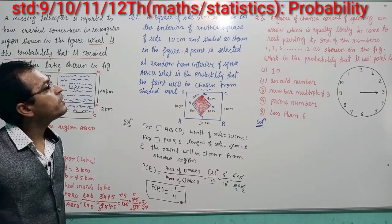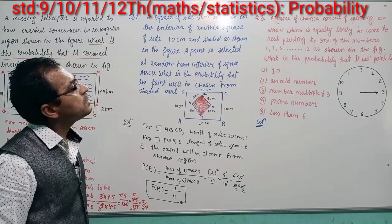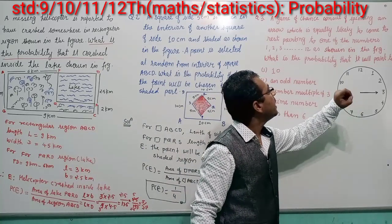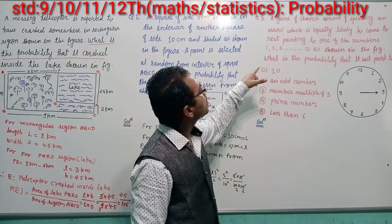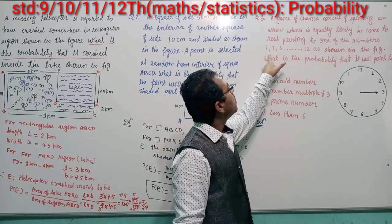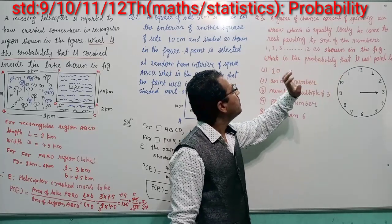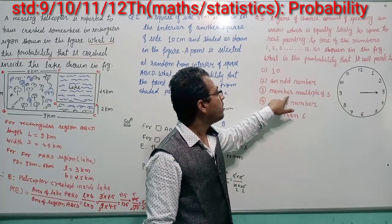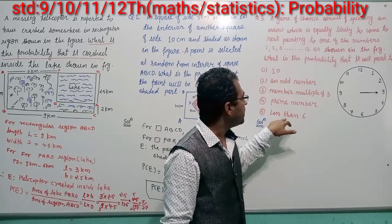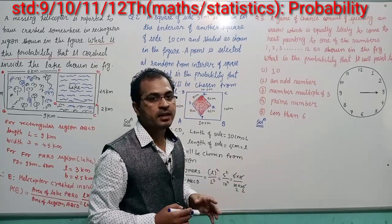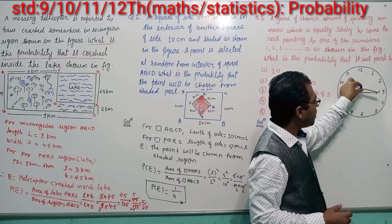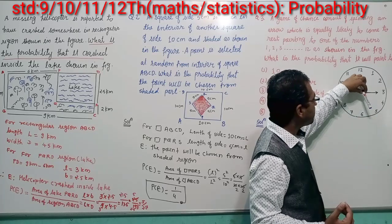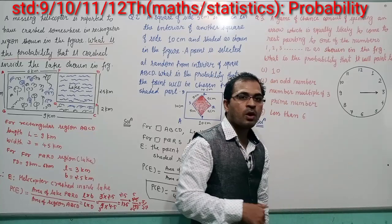Now, this is a game of chance. A game of chance consists of spinning an arrow which is equally likely to come to rest pointing to numbers 1 to 12. The arrow will rotate and can rest on maybe 6, maybe 12, maybe 3 — it all depends on probability. We have multiple sub-questions to find different probabilities.